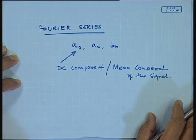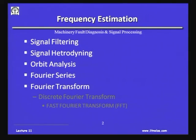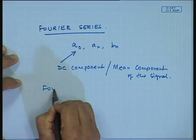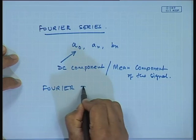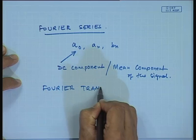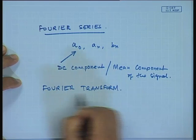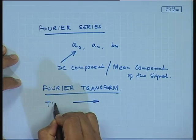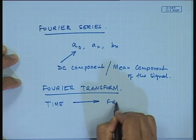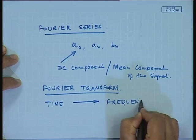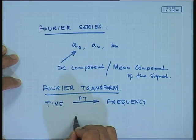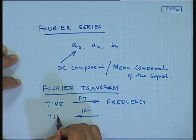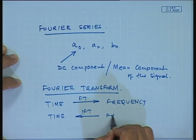Because of the limitations of Fourier series — the signal may not be continuous, may not be periodic, etc. — we have the Fourier transform, wherein the Fourier transform can be applied in the forward direction from the time domain to the frequency domain. And with the inverse Fourier transform, I can get back the time domain from the frequency domain.